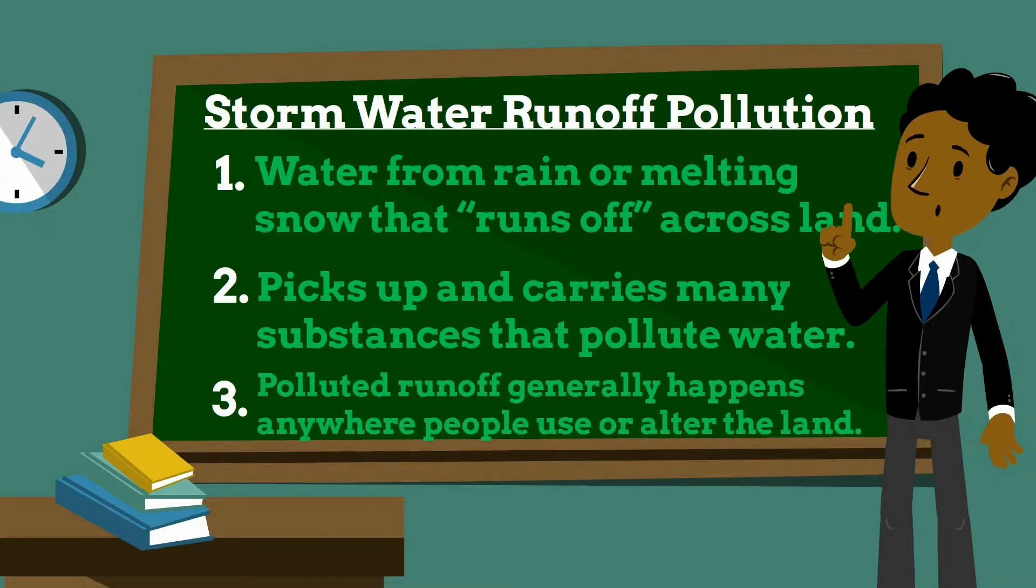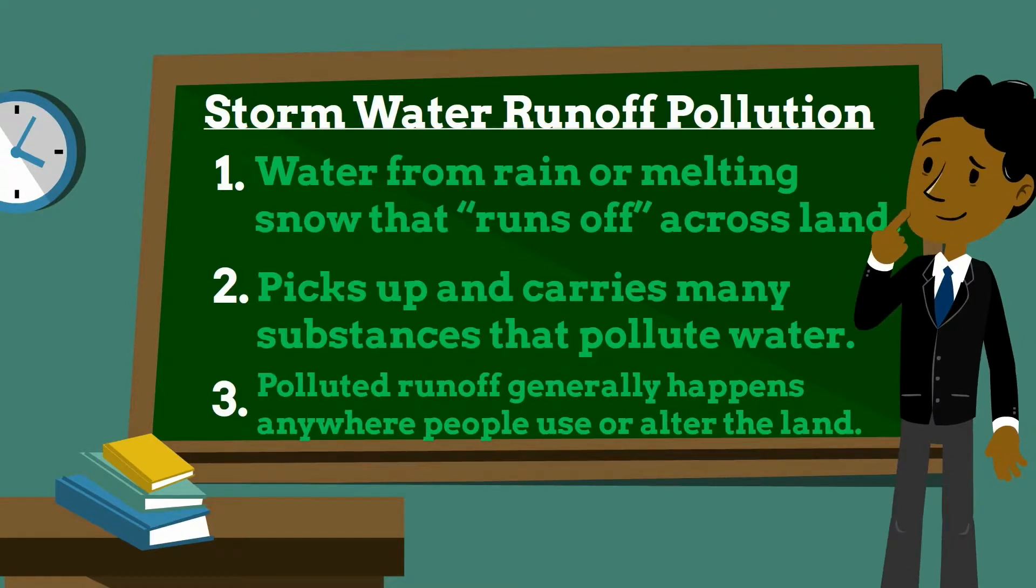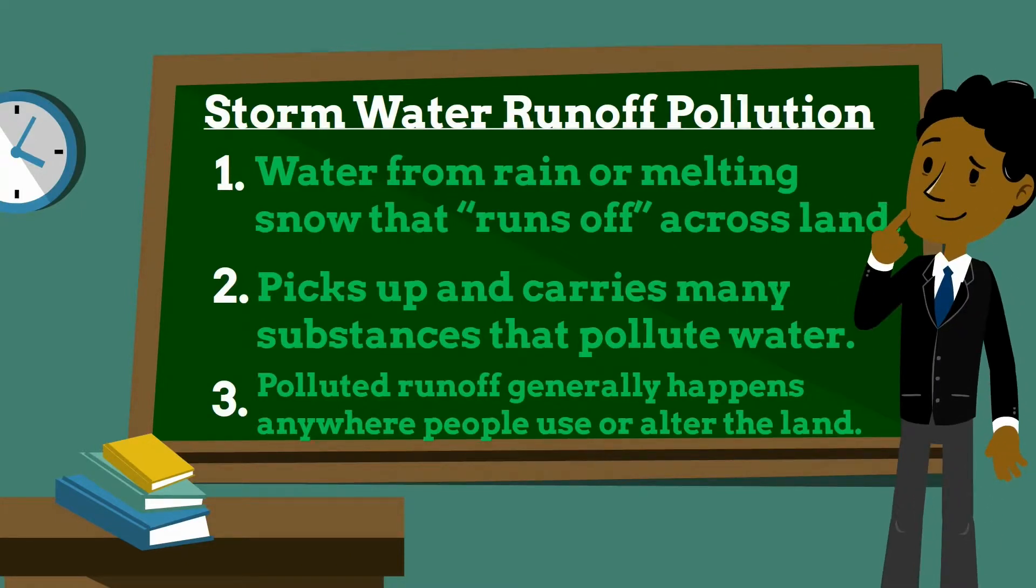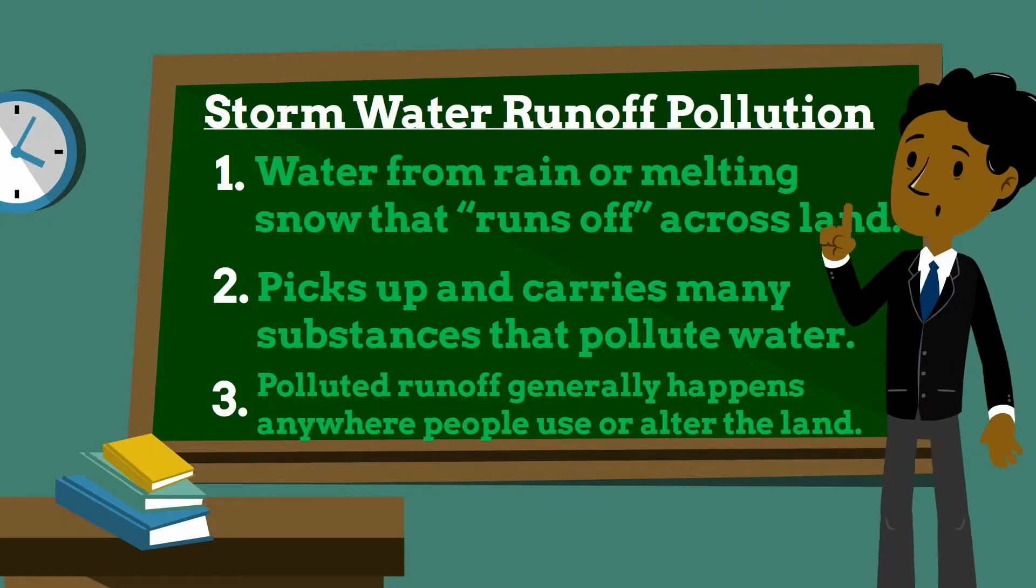Polluted runoff generally happens anywhere people use or alter the land. For example, in developed areas, none of the water that falls onto hard surfaces like roofs, driveways, parking lots, or roads can seep into the ground.